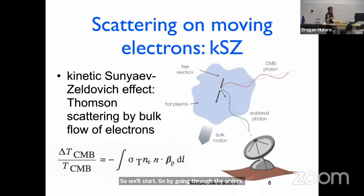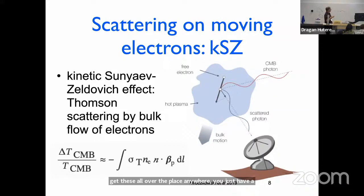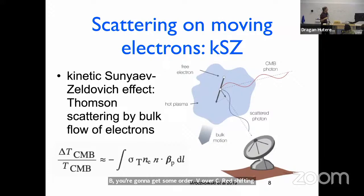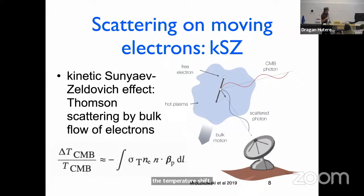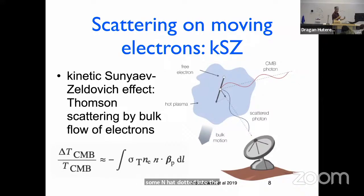We'll start with the kinetic Sunyaev–Zel'dovich effect, which is first order in velocity. If you have some cloud of electrons — and you get these all over the place — and CMB photons come in, and if this cloud has some bulk velocity, you're going to pick up some net redshift or blueshift depending on whether that thing is coming towards you or away from you. It's basically just a moving mirror. If you have a mirror moving towards you with velocity V, you're going to get some order V/c blueshifting or redshifting from all the light that gets scattered. The fractional temperature shift depends on how much scattering happened — the number density times dL — and then it's the projection: n-hat dotted into the peculiar velocity in units of V/c.